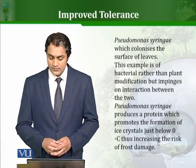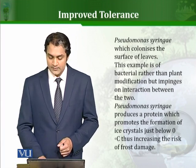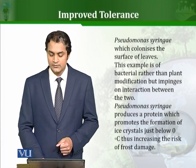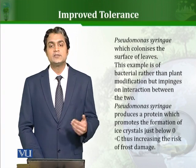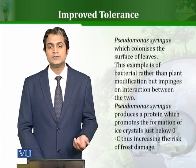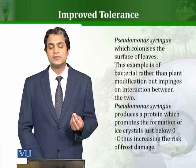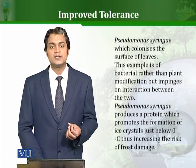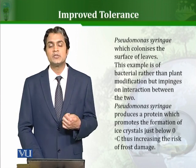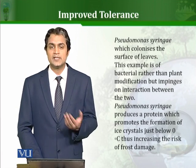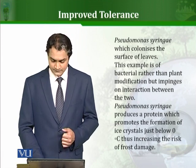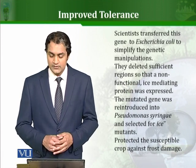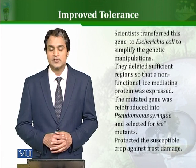Pseudomonas syringae produces a protein which promotes the formation of ice crystals just below 0 degrees Celsius, thus increasing the risk of frost damage. This bacteria is found naturally on the leaves of plants. Scientists transferred this gene to E. coli to simplify the genetic manipulation.